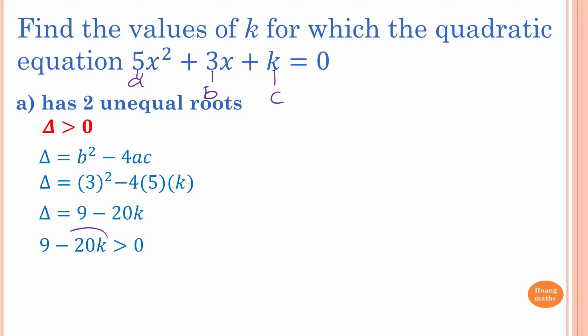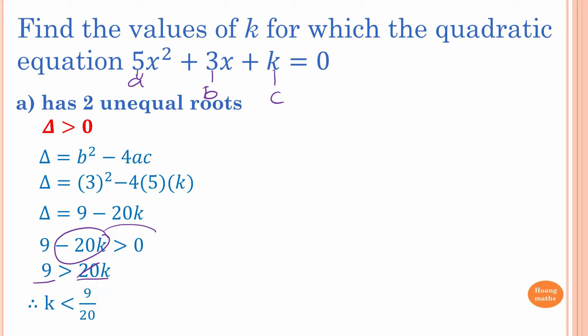Moving the negative 20k to the other side, we get 9 is greater than 20k. Dividing by 20, k is less than 9 over 20. That's the answer.